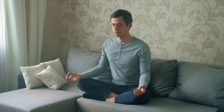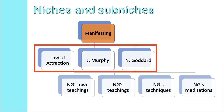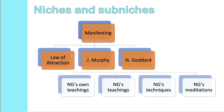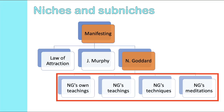If we take manifesting and consider that to be the niche, then we look at the sub-niches — we can put them into three main categories. The first and largest by far is the law of attraction. Then there are two teachers who have been teaching law of attraction techniques for quite a while and become quite popular: Joseph Murphy and Neville Goddard. I've chosen Neville Goddard to explore in more detail because there's a lot of variety in the approaches that channels specializing in Neville Goddard have taken.